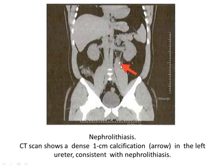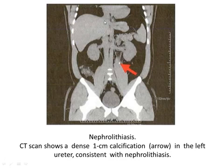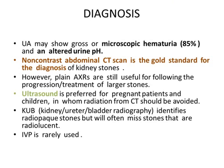Here is the stone on imaging. The nephrolithiasis CT scan shows a dense 1 cm calcification. The arrowhead shows the right side (where the liver is) and the left side — it is in the left ureter, consistent with nephrolithiasis. The CT scan used was the non-contrast abdominal CT scan.